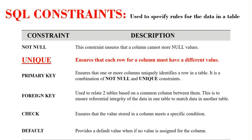In my previous video, we talked about the NOT NULL constraint. Today, we are going to discuss the UNIQUE constraint. This is a constraint that ensures that each row for a column has a different value — it does not permit the entering of duplicate values in each row for a column. Like the NOT NULL constraint, many columns in a table can have the UNIQUE constraint. Also, when you set a unique constraint on a column, it automatically creates a non-clustered index on that column.